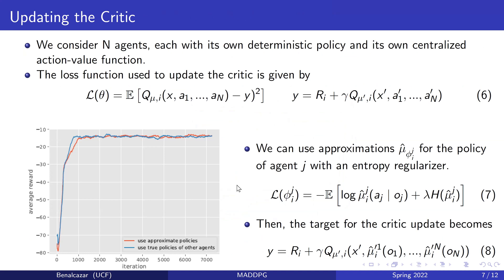To update the critic, we consider N agents each with their own deterministic policy and their own centralized action-value function. Each agent can have a different Q function, which allows for different reward functions. They use a loss function similar to Q-learning, where they consider the expected value of the Q function minus a target, and the target is determined using previous values of the Q function — similar to standard Q-learning.